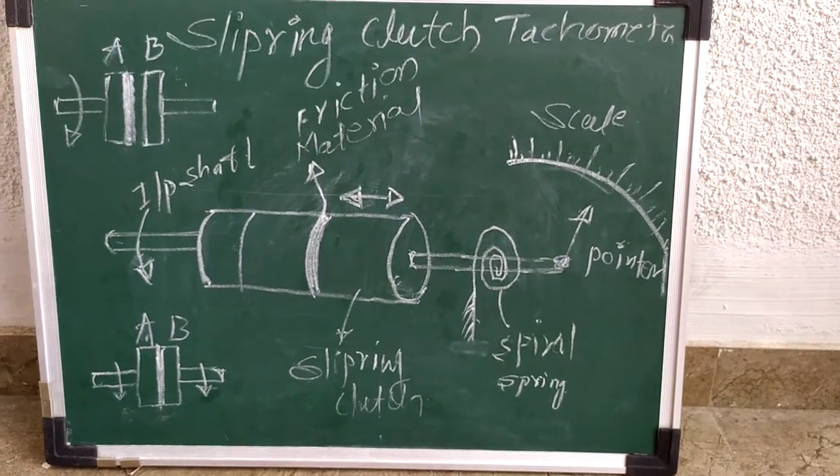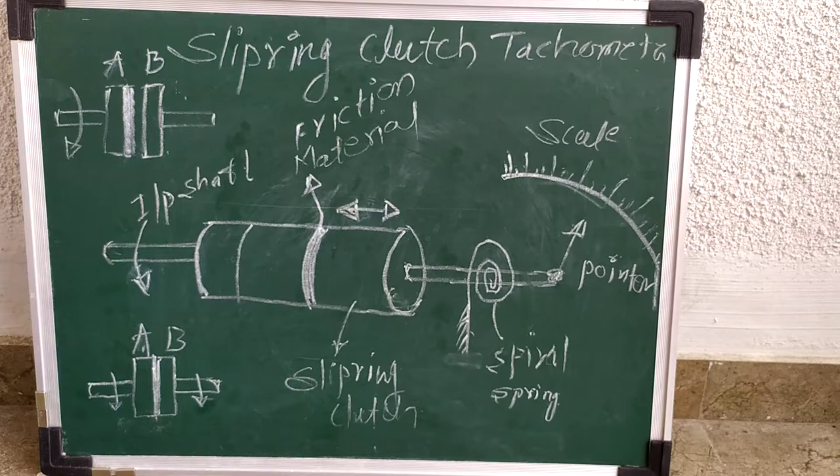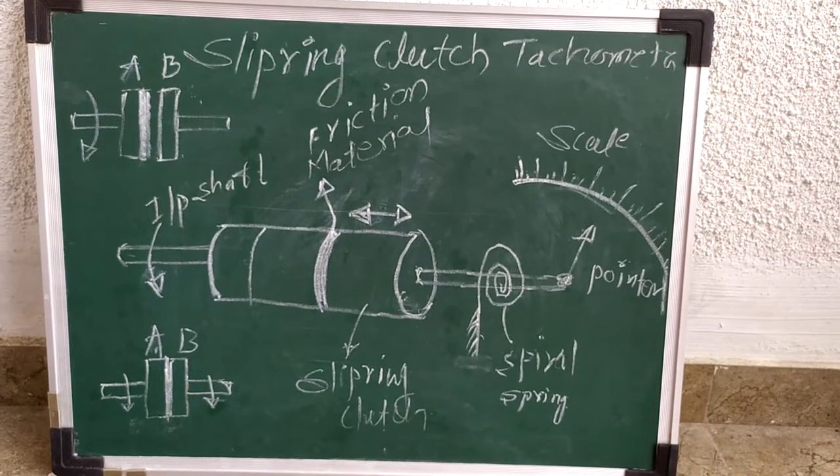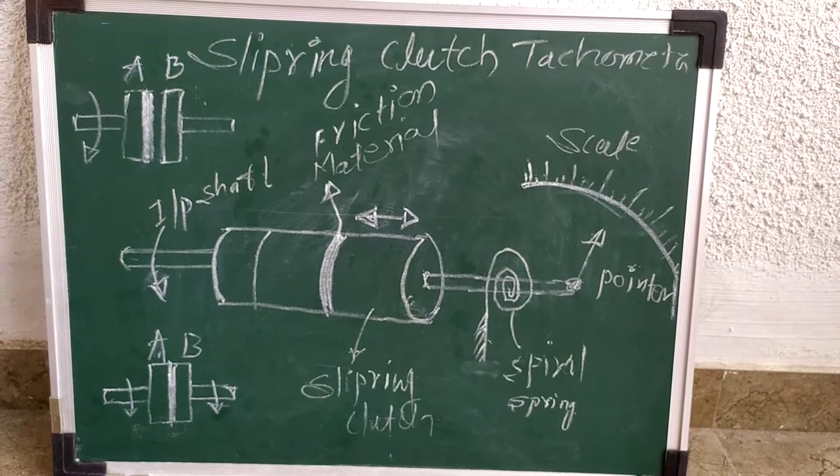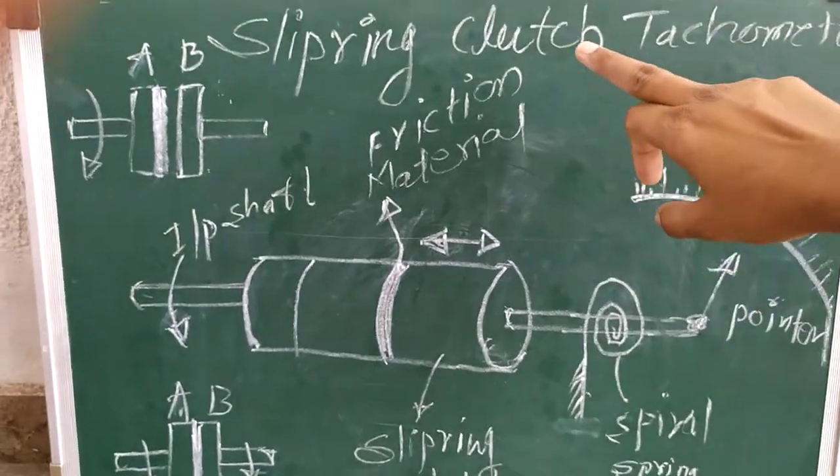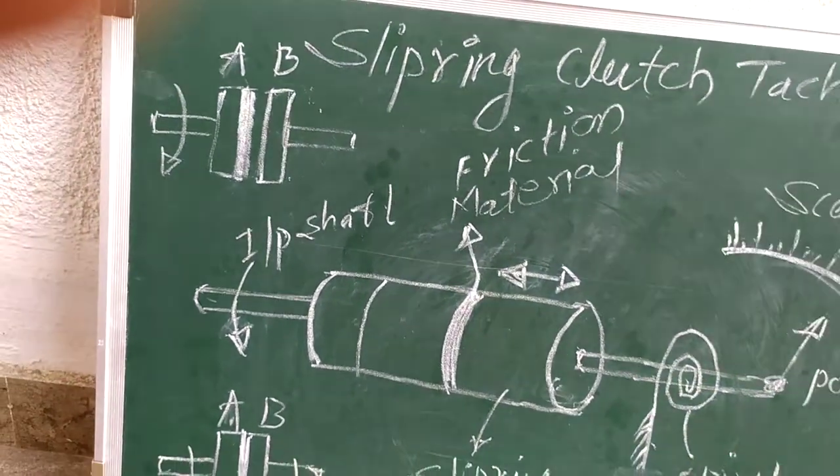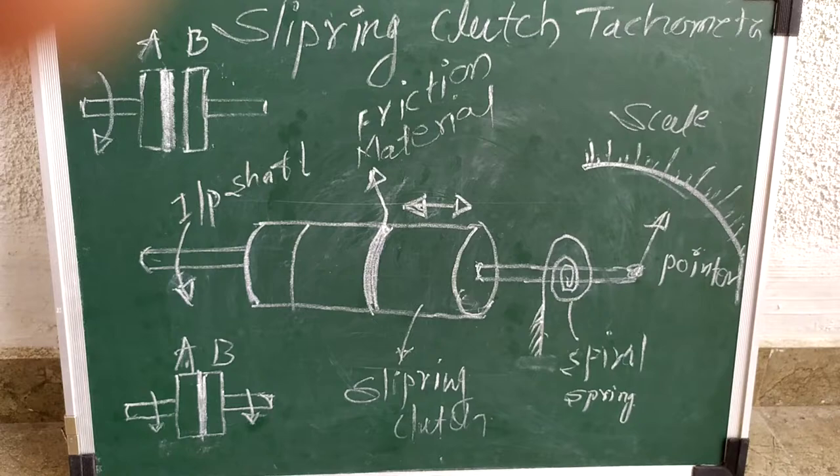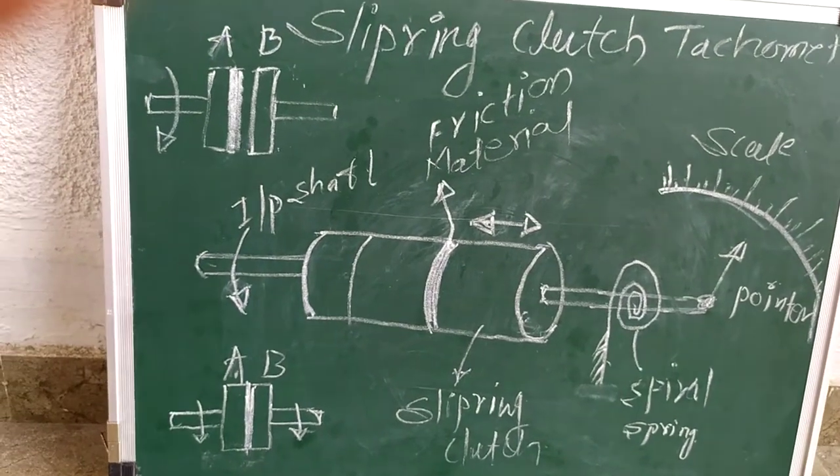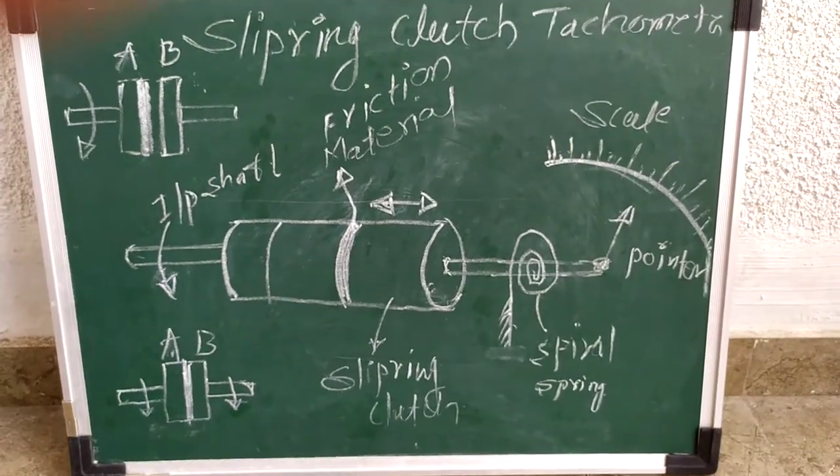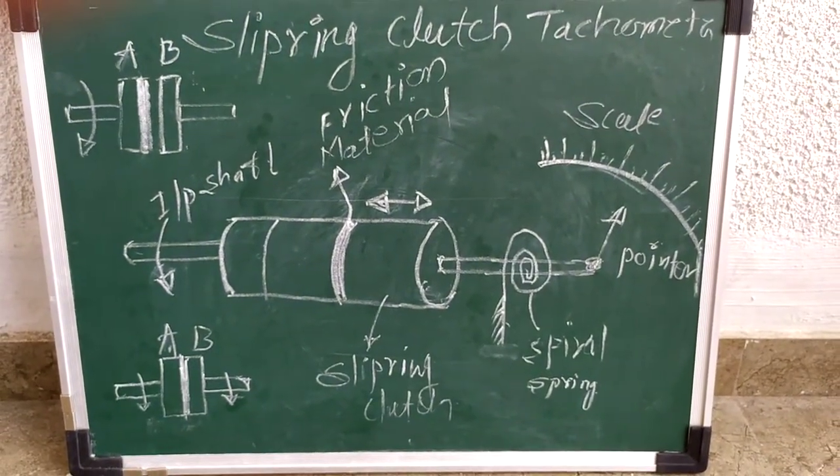Hello friends, our next speed measurement device is the slip ring clutch tachometer. In this device, the name is given as clutch. You all know what is meant by clutch - it is a device which can engage and disengage the engine power from the entire transmission system to the wheel of the driver. We are using that phenomenon here to measure the speed of any device or any shaft.